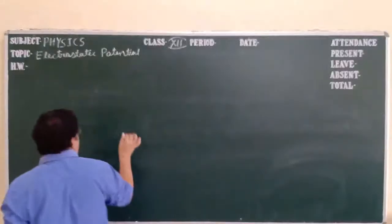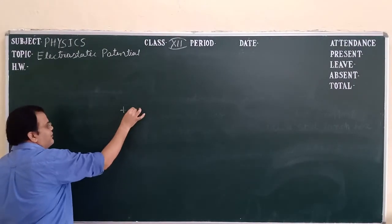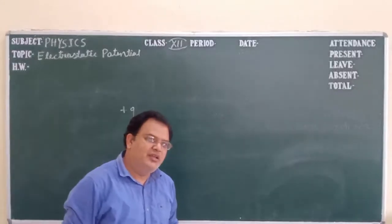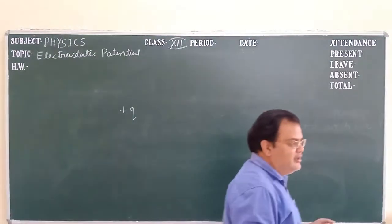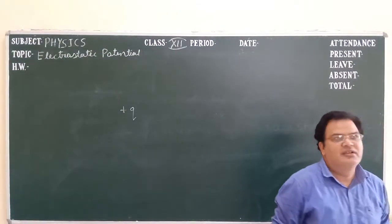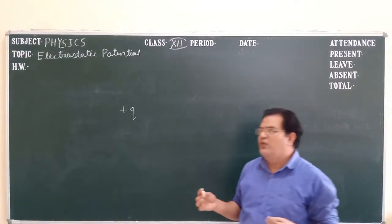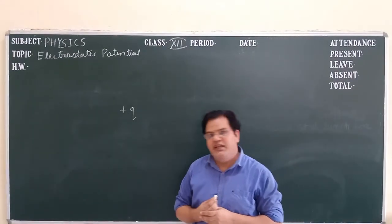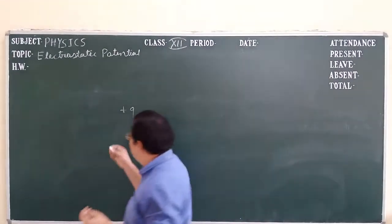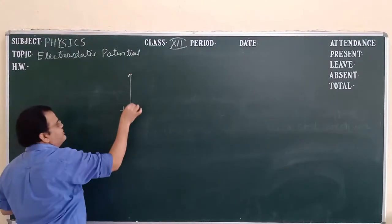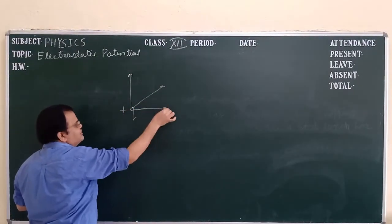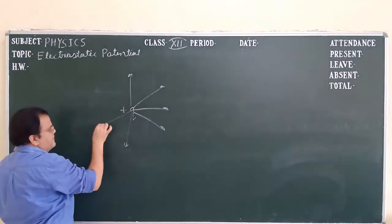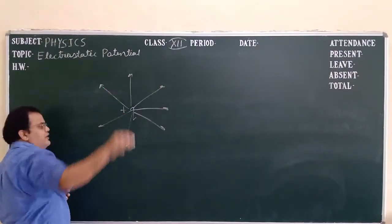You know that if we have a plus 2 charge, it spreads its electric field lines in all directions — in this way, outward in all directions.